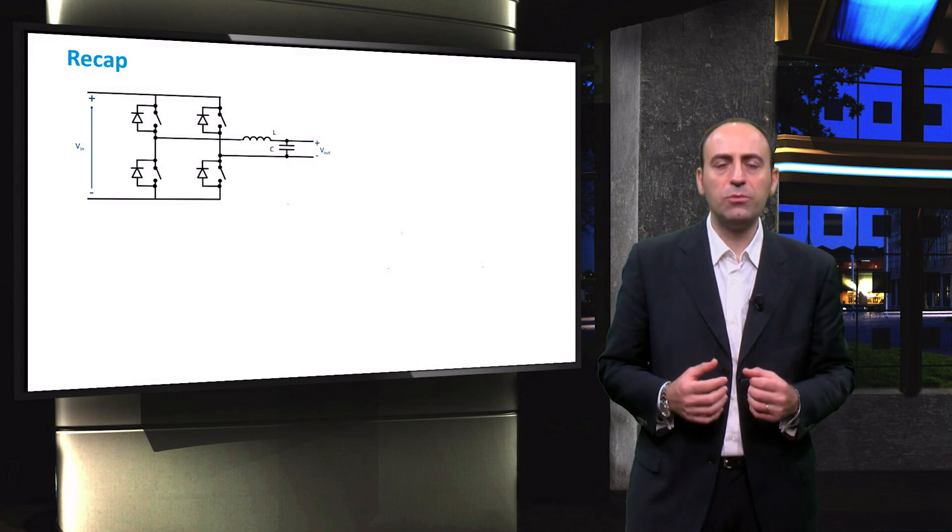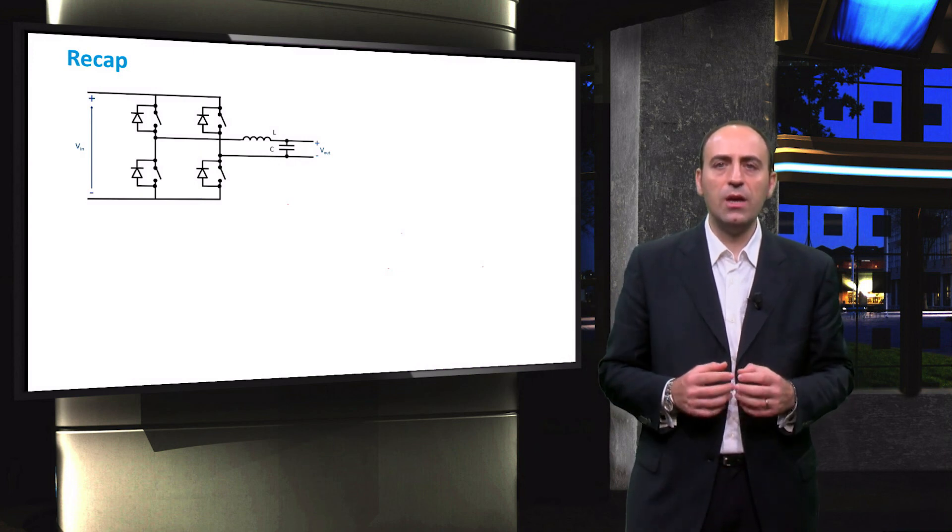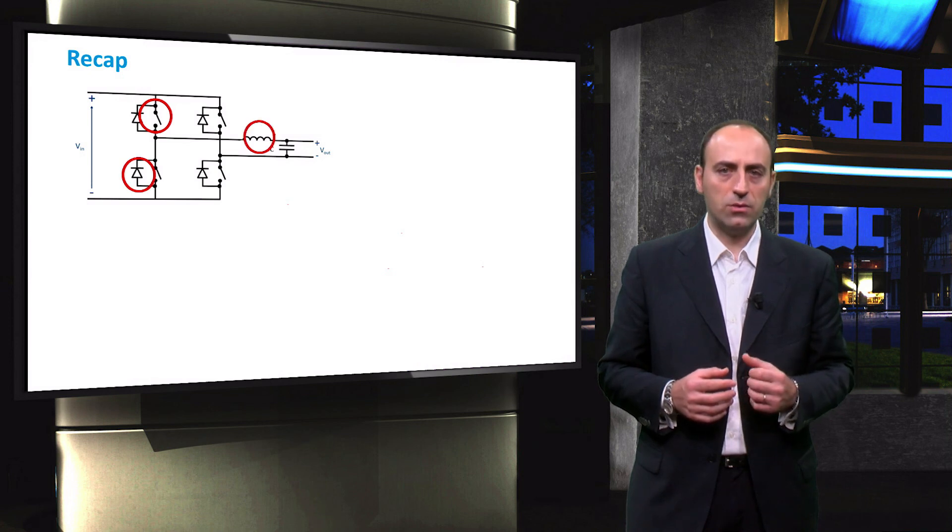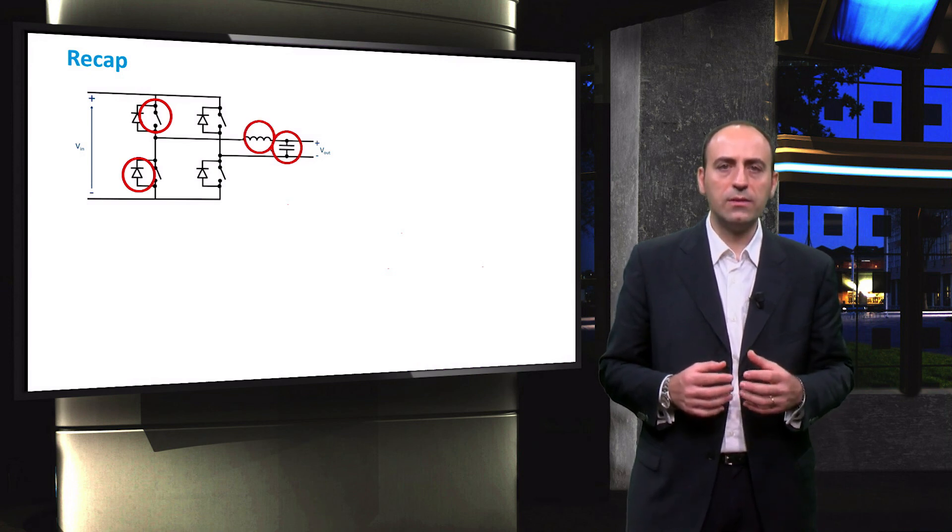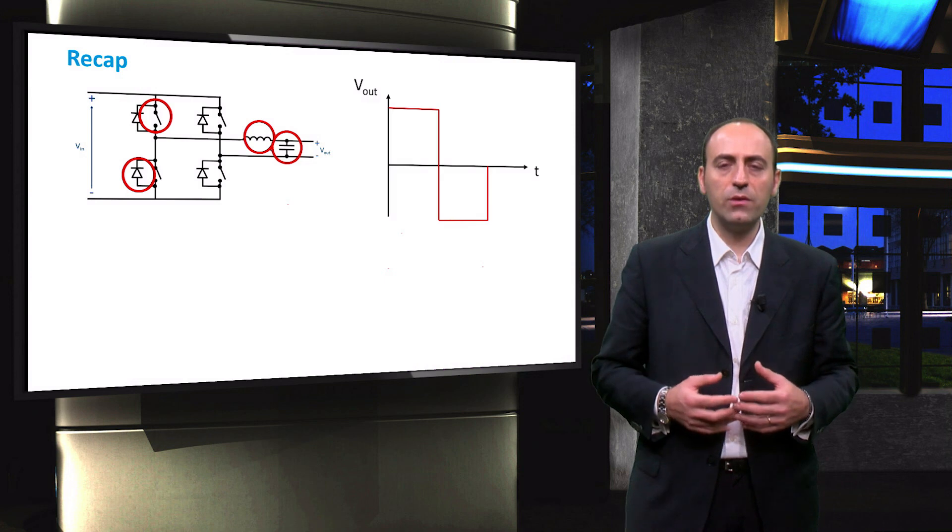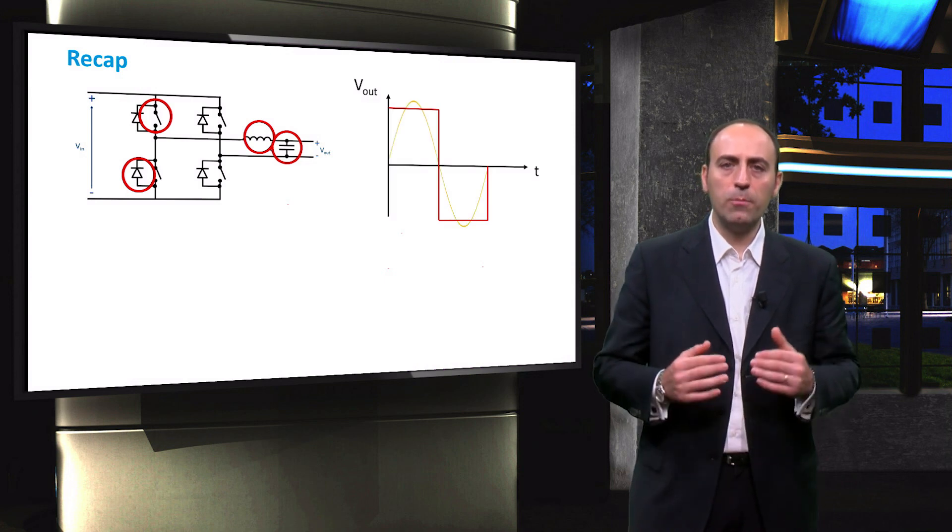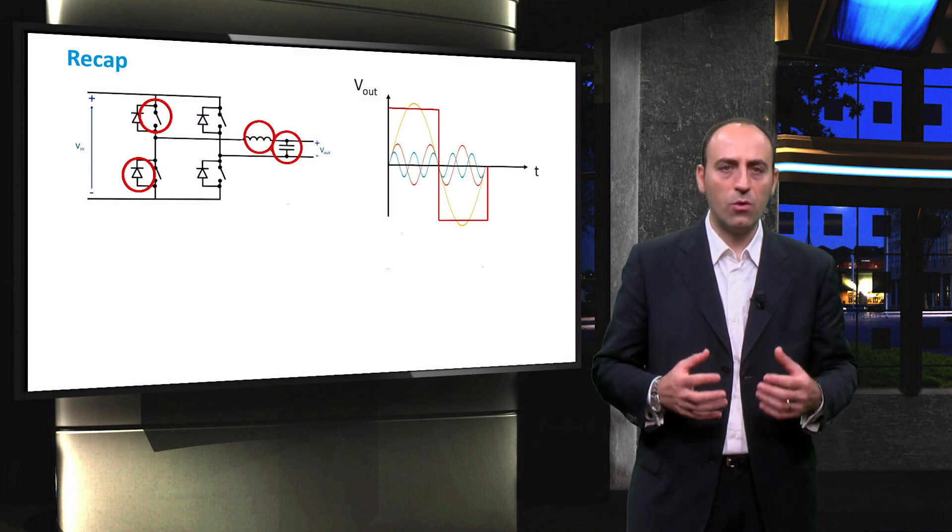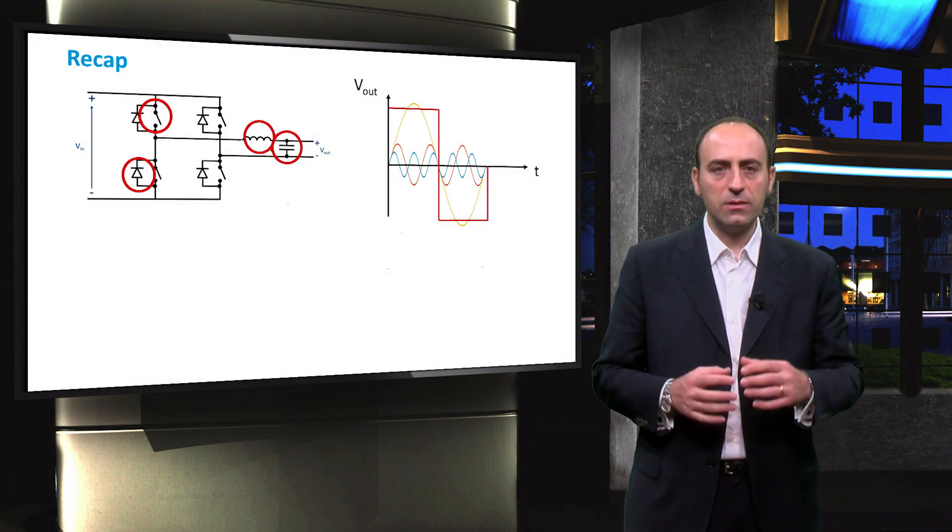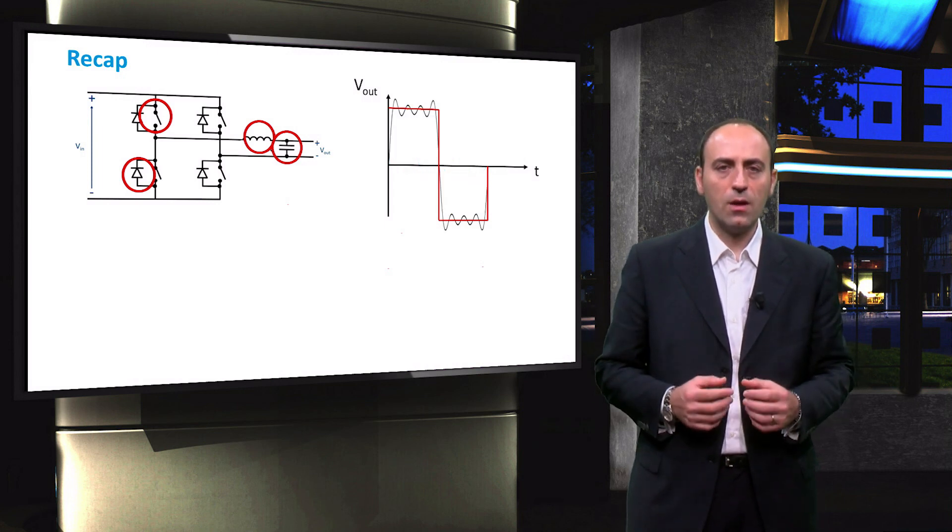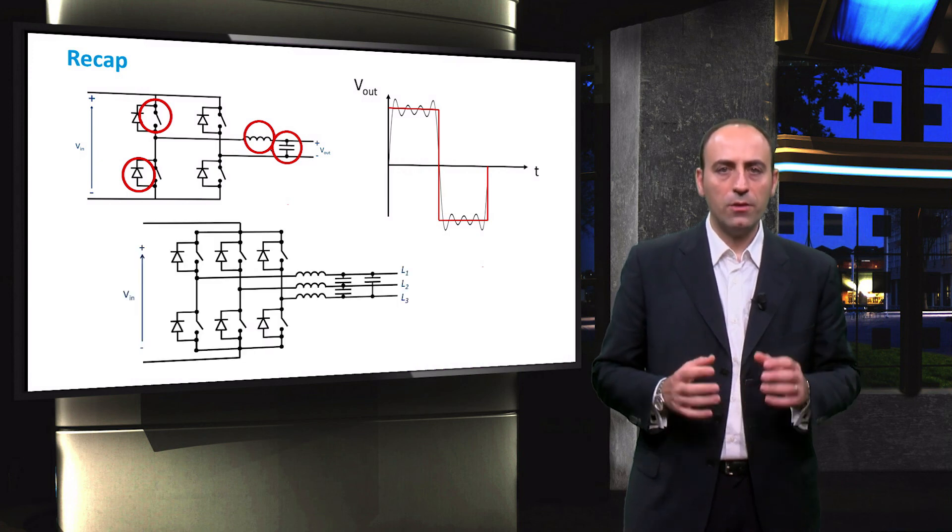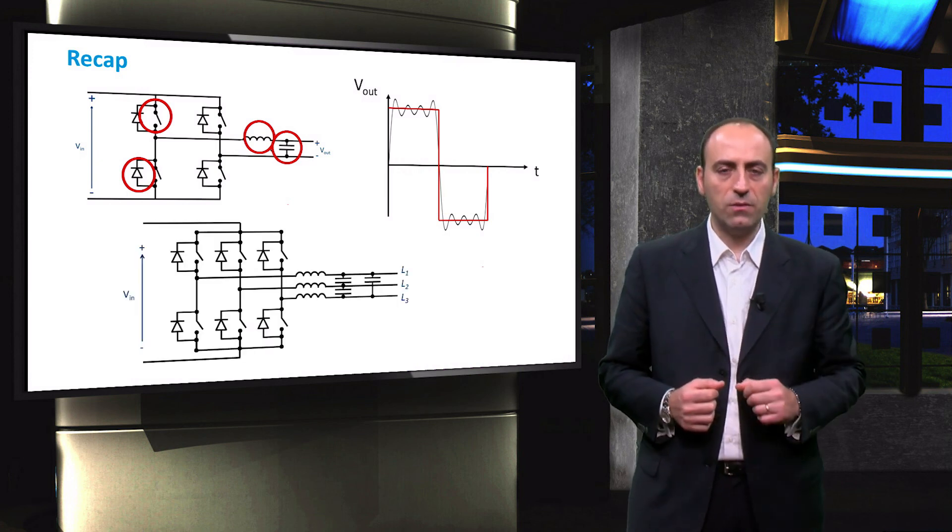To sum up, we saw that a H-bridge DC to AC converter is composed by switches, flyback diodes, inductors and capacitors. We also saw that the output waveform of the inverter is a pulse train that can be seen as a pure sine wave superposed to other higher order sine waves that create harmonic distortion. The square wave is then the sum of all the harmonics. Finally, we saw the typical topology of a three-phase inverter. Thank you for watching and see you in the next video.